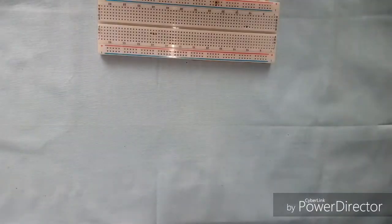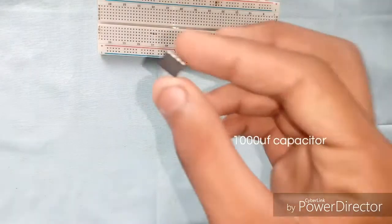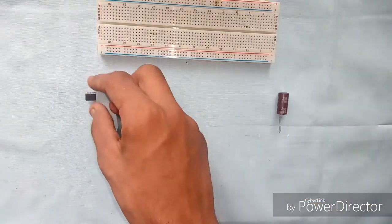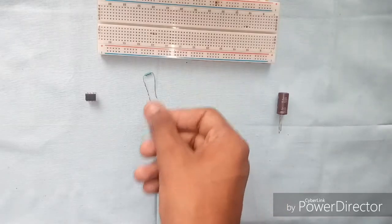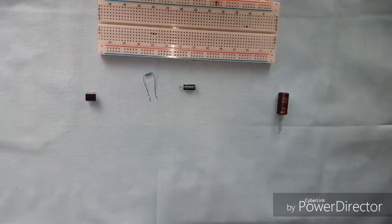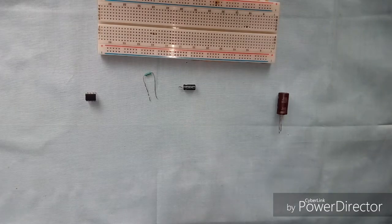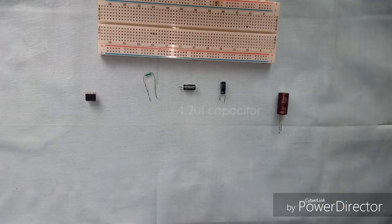Now for the first, for this build: a breadboard, 1000 µF capacitor, a 555 timer IC which looks something like this, a 47k resistor, one 1 µF capacitor and 4.7 µF capacitor.